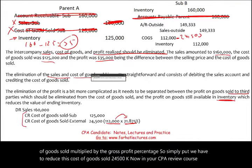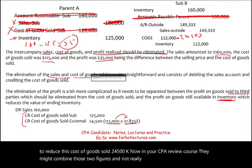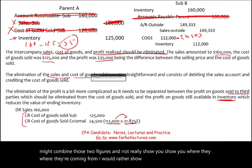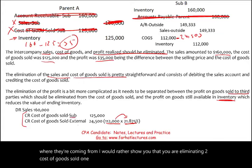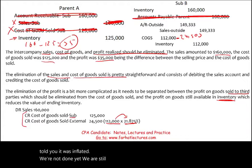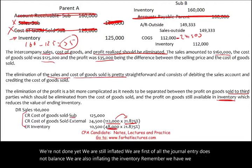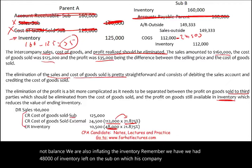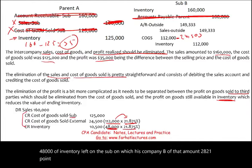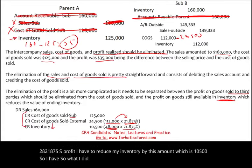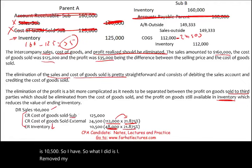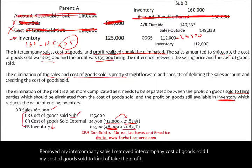Your CPA review course may combine those two cost of goods sold figures, but I prefer to show both separately. We're still not done — the journal entry doesn't balance yet and the inventory is still inflated. Company B has $48,000 of inventory remaining, of which 21.875% is intercompany profit = $10,500. So we credit Inventory by $10,500 to remove the embedded profit. In summary: we removed intercompany sales, removed intercompany COGS, reduced B's COGS by $24,500, and reduced ending inventory by $10,500.